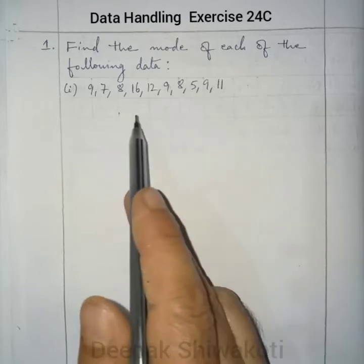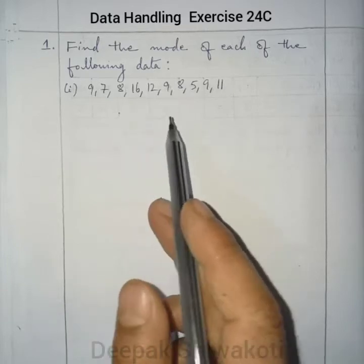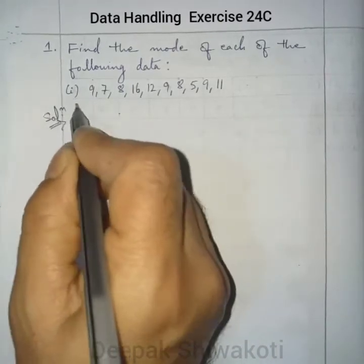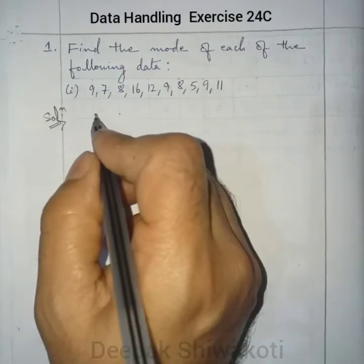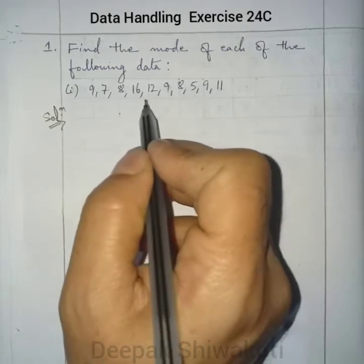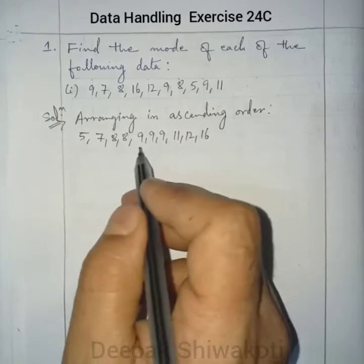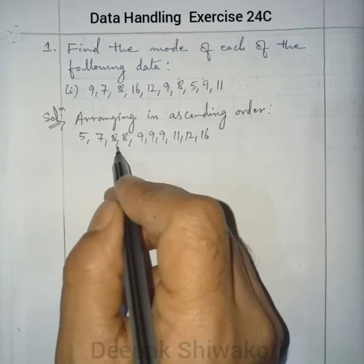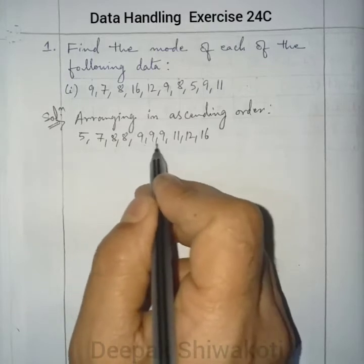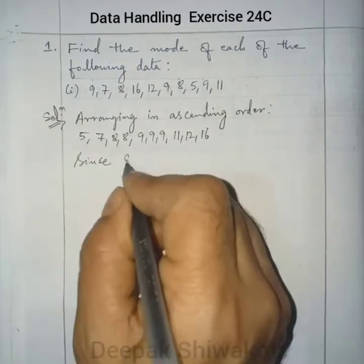Mode means the value or observation which occurs most often. For the solution, we arrange in ascending order. The lowest value is 5 and the highest is 16. Arranging in ascending order, we get: 5, 7, 8, 8, 9, 9, 9, 11, 12, 16. We can easily see that 9 is occurring most of the time.